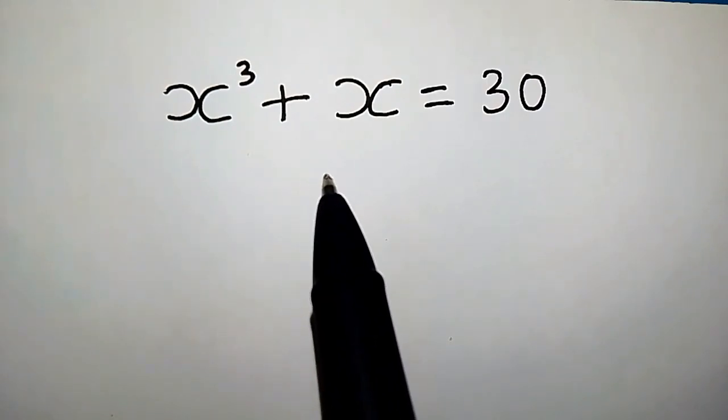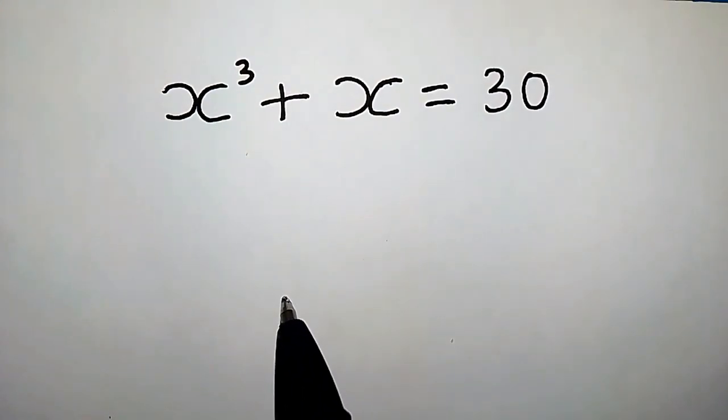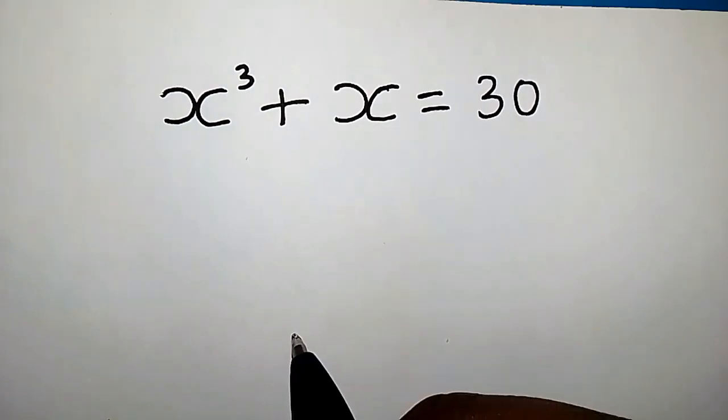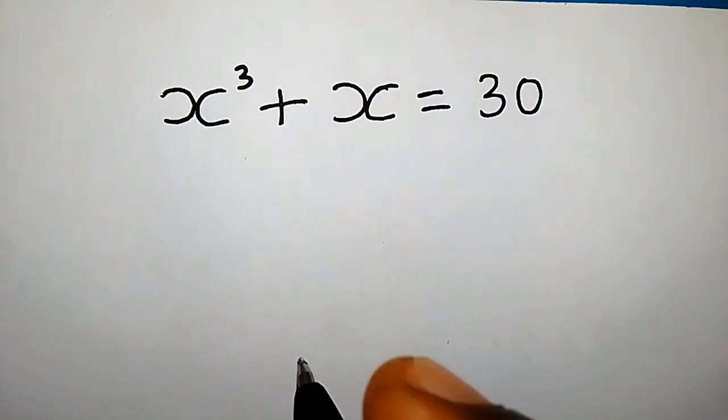x to the power of 3 plus x equals 30. How do we find all possible solutions for x? Without further delay, let's begin the solution.